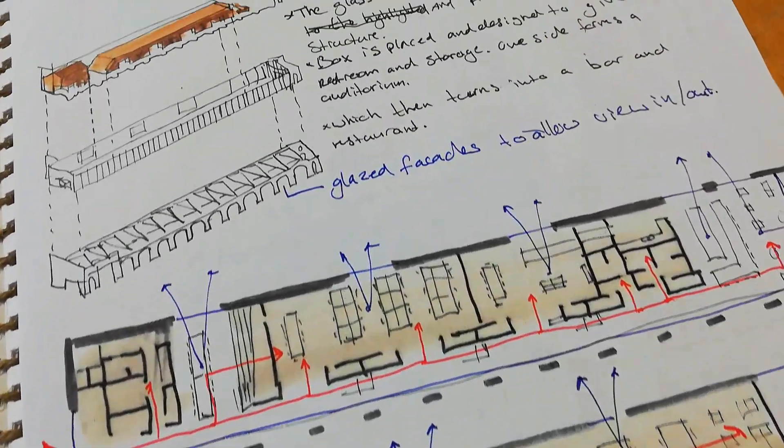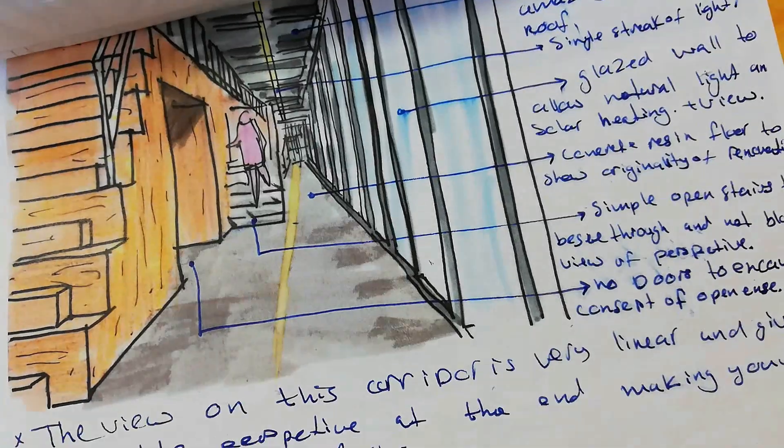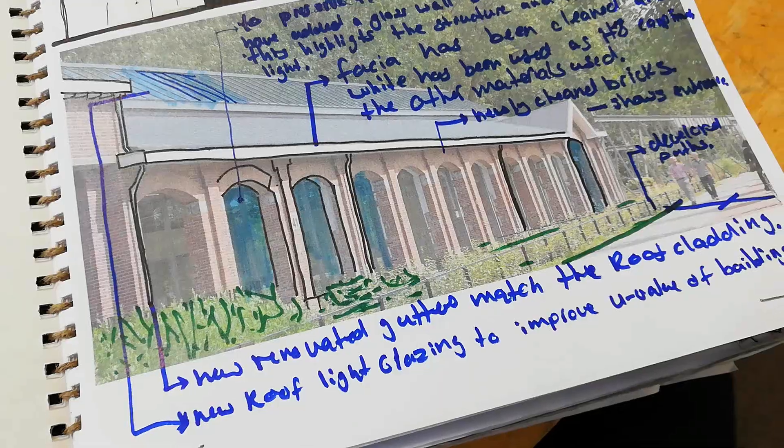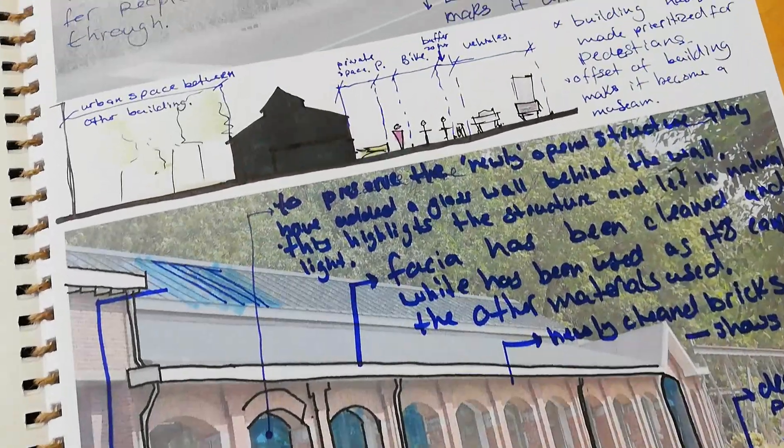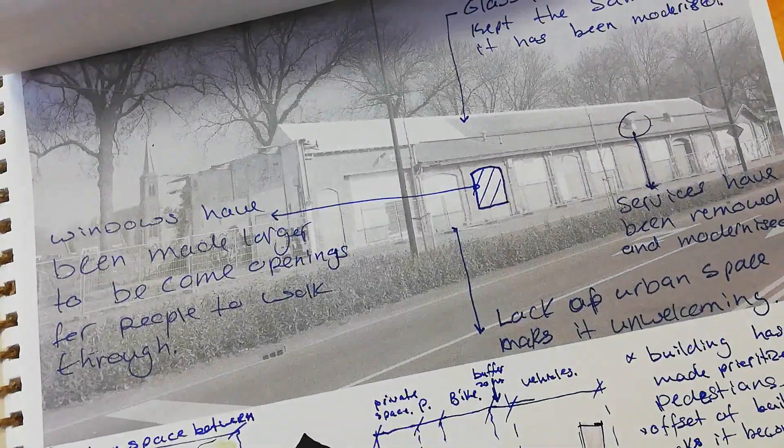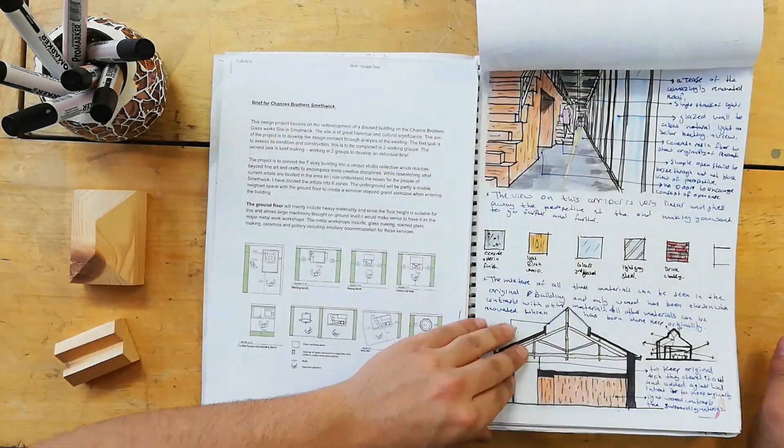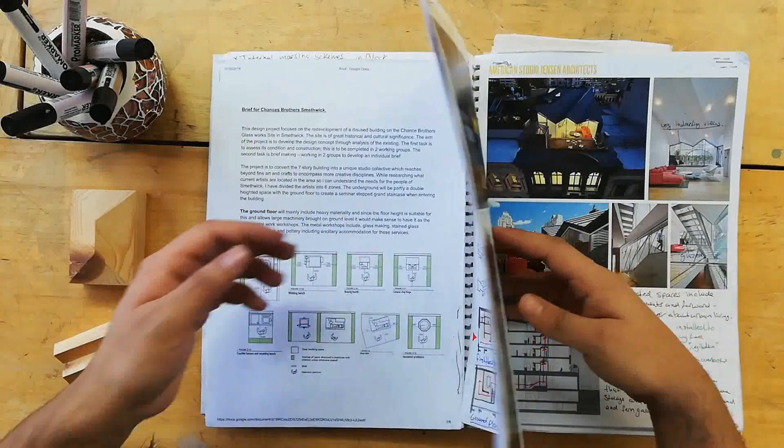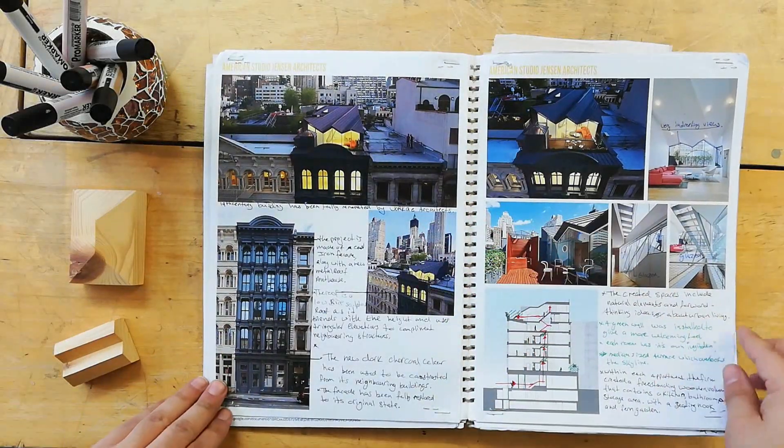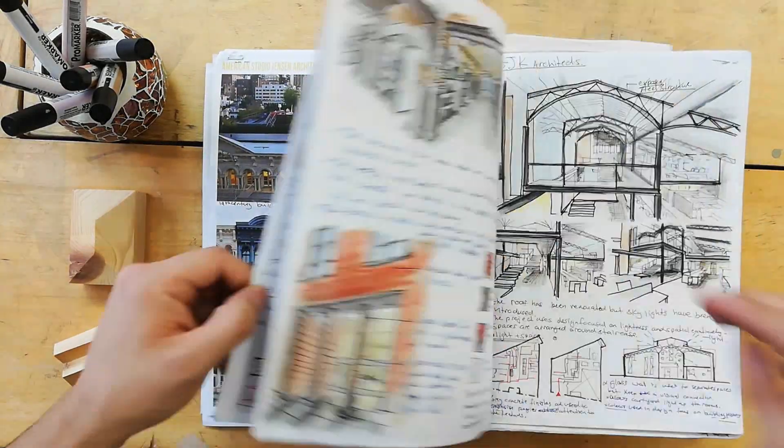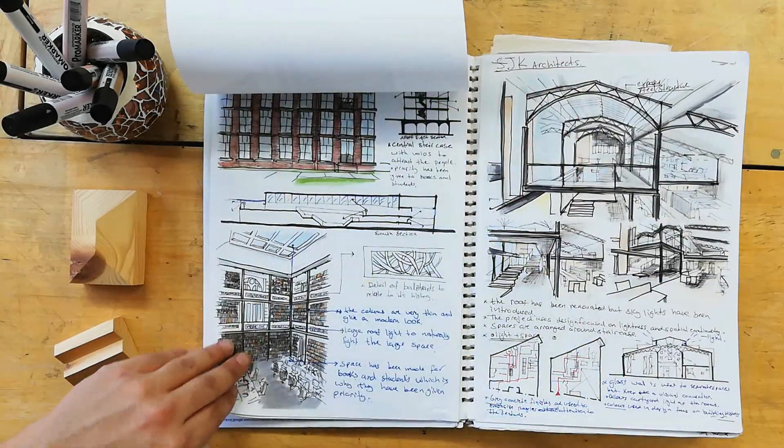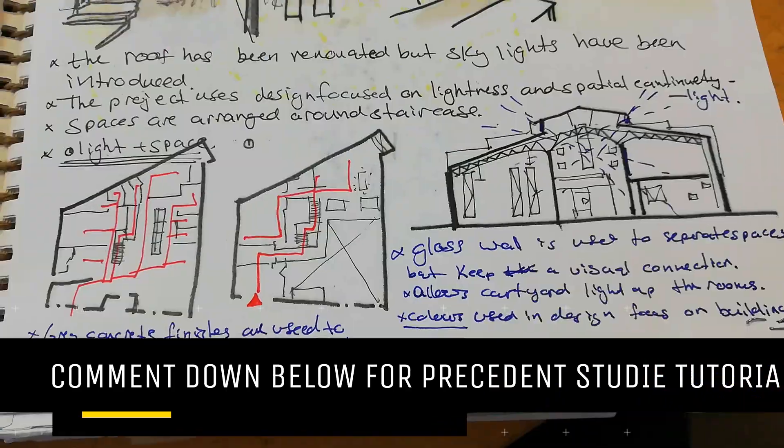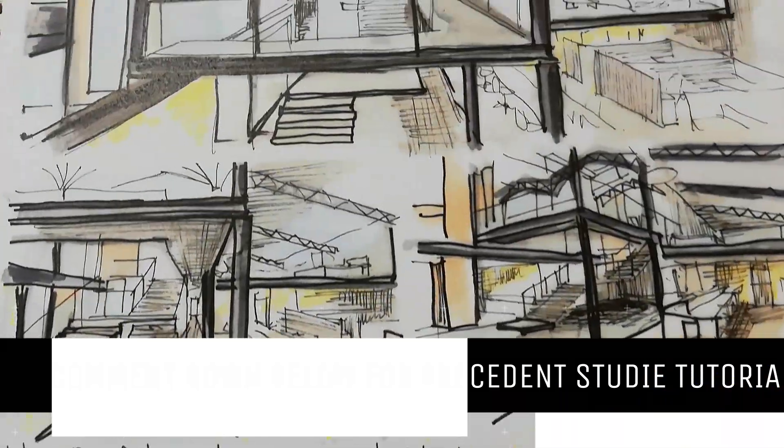Now we will talk about precedent studies. Precedent studies should be done in great detail. Not every single one, but the ones you think will use throughout your design process should be in detail. As you can see some images and some are detailed drawings, analysis, important features to the project. I mainly looked at the interior spaces since this is a renovation project and it's a listed building, meaning I can't do anything to the exterior. All I can do is mess around with the interior. If you want to see how to do the precedent studies, let me know in the comments section down below.